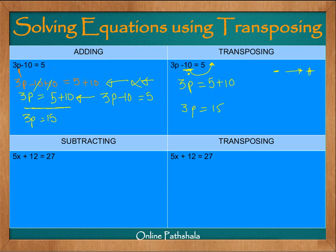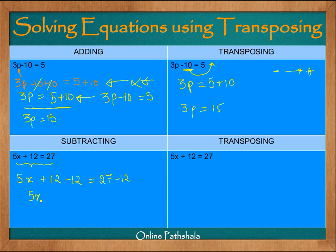When we have an addition or subtraction, we move the number to the other side and a sign change is involved. Now let us look at the case where we have to subtract. Using our conventional method, the first step would be subtracting 12 from both sides: 5x plus 12 minus 12 equals 27 minus 12, giving us 5x equals 27 minus 12.